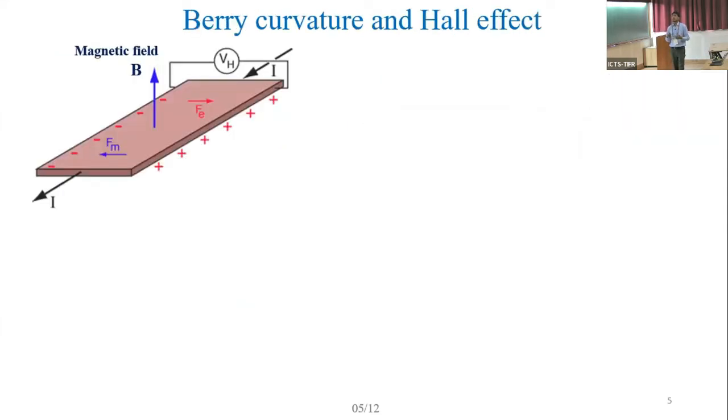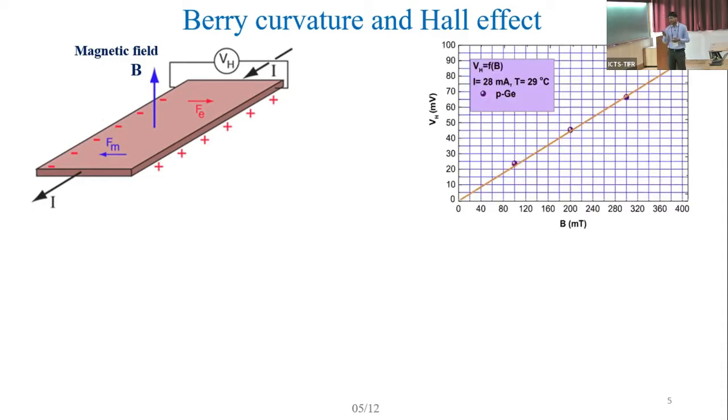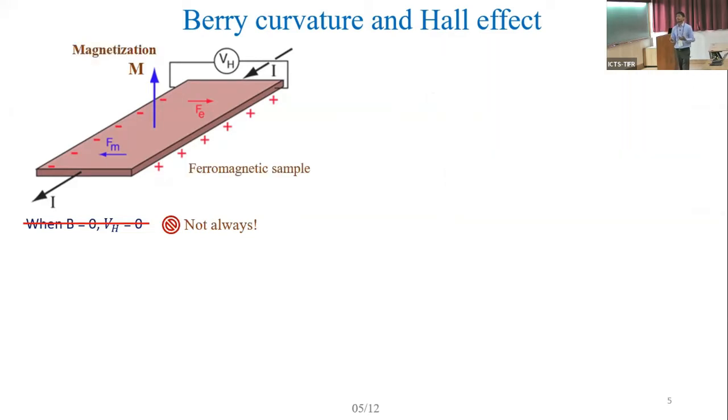To understand the effect of Berry curvature in our real system, we can think of Hall effect where we apply a perpendicular magnetic field and pass current through the sample. We get a transverse voltage, which is linear in the magnetic field. When we reduce the magnetic field to zero, the Hall voltage should be zero. But this is not always true because for some ferromagnetic ordering in the system, we can sometimes have the anomalous Hall effect.